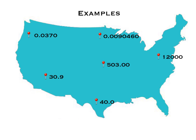Here are some examples. For 0.0370: the decimal is present, so we go to the Pacific side and start at the first non-zero, giving us 3, 7, 0 — three sig figs. For 30.9: the decimal is present, so starting from the Pacific side at the first non-zero, the 3 is first, then 0 and 9 — that one also has three sig figs.